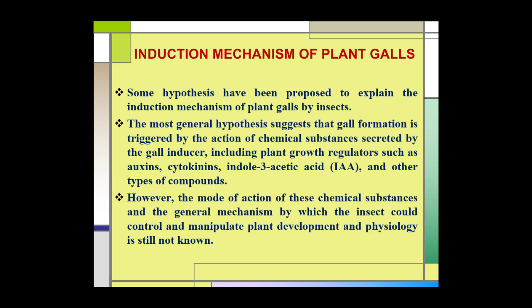Induction mechanism of plant gall. Some hypotheses have been proposed to explain the induction mechanism of plant galls by insects. One of the most common hypotheses suggests that gall formation is triggered by the action of chemical substances secreted by the gall inducer. These chemical substances include plant growth regulators such as auxin, cytokinins, indoleacetic acid, and other types of compounds. However, the mode of action of these chemical substances and the general mechanism by which the insect could control and manipulate plant development and physiology is still not known.